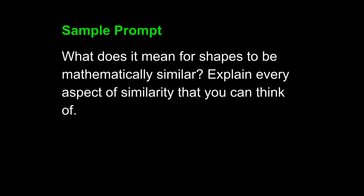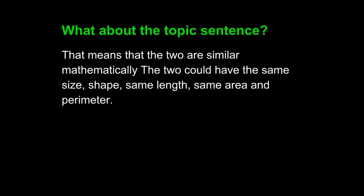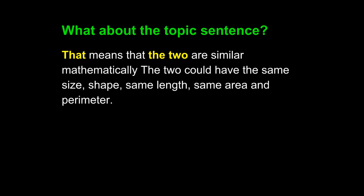In this prompt, we are talking about shapes. Shapes should be your core noun because your teacher has asked you to think about and write about shapes. This student has written a sentence that uses subjects that are unclear. 'That' is the first subject. 'The two' is the second. Neither of those directly state shapes.